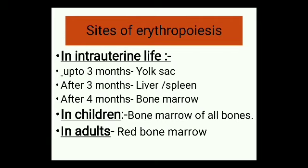Now, the sites of erythropoiesis — where does it occur? In the first three months, erythropoiesis happens in the mesoderm of the yolk sac. After three months, it shifts to the liver and spleen. From the fourth month onwards, it also begins partially in the bone marrow.